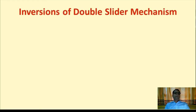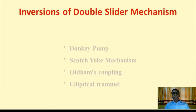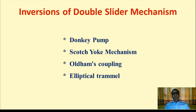Regarding inversions of the double slider mechanism, there are many, but we will discuss the first four types: the Donkey Pump, the Scotch Yoke, Oldham's Coupling, and the Elliptical Trammel.